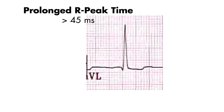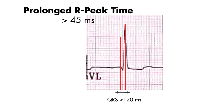You can also see a prolonged R peak time, which is the time from the beginning of the QRS complex to the peak of the R wave. This time will be greater than or equal to 45 milliseconds. And even though the R peak time is prolonged, the QRS complexes are typically less than 120 milliseconds.